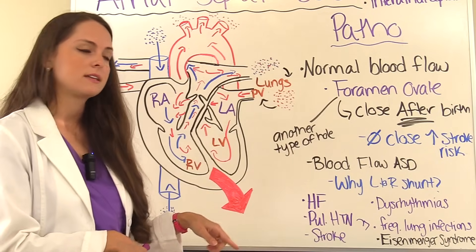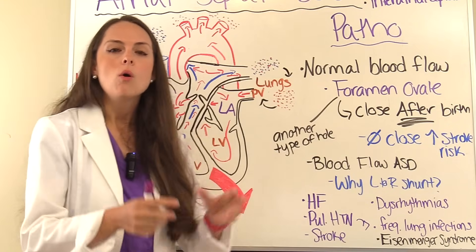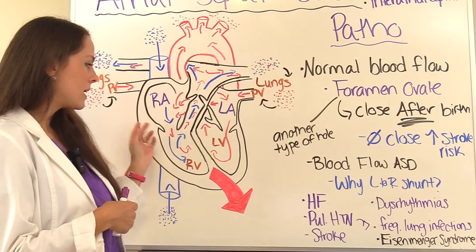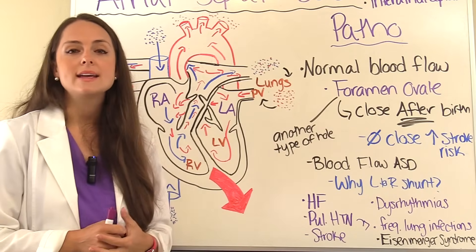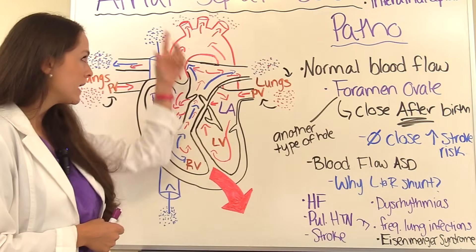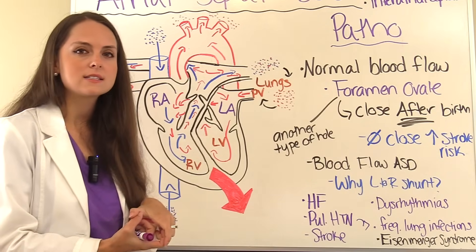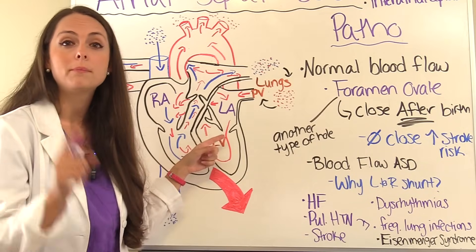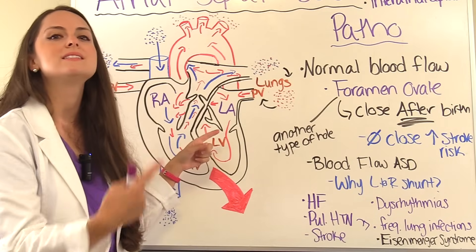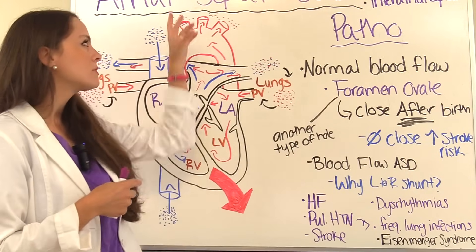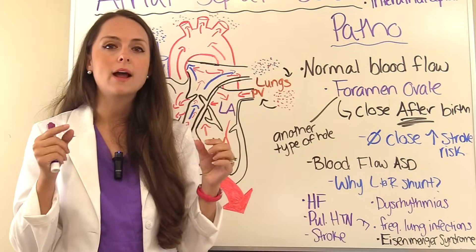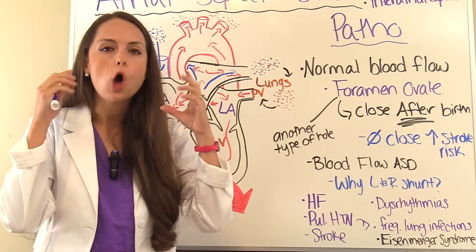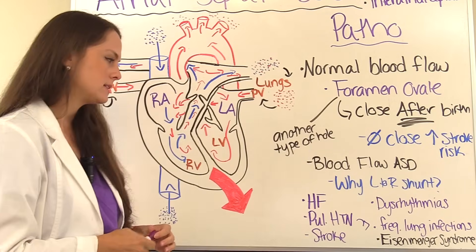One thing that's different with an ASD compared to a VSD is the increased stroke risk. Clots form in the veins sometimes, and normally that clot travels from the right side to the lungs. But if there's a hole in the right atrium and a clot comes in through the venous circulation, that hole invites the clot to cross over into the left side. The left side then pumps it throughout the system — it can travel up to the brain, blocking blood flow to brain tissue and causing a stroke.